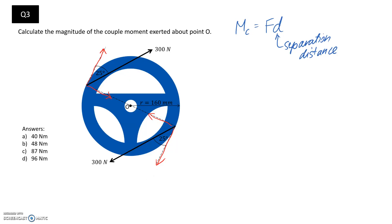What we would find is that these two forces here that point directly toward each other, their separation distance is going to be zero. So they're not going to contribute to the couple moment. That's the approach I'm going to take.